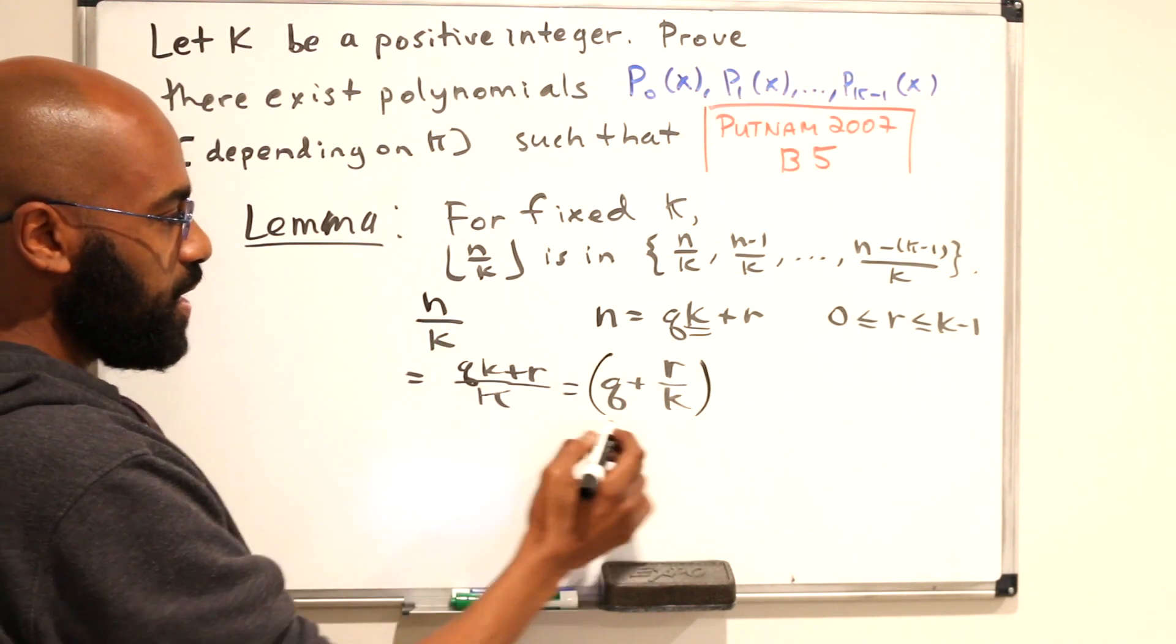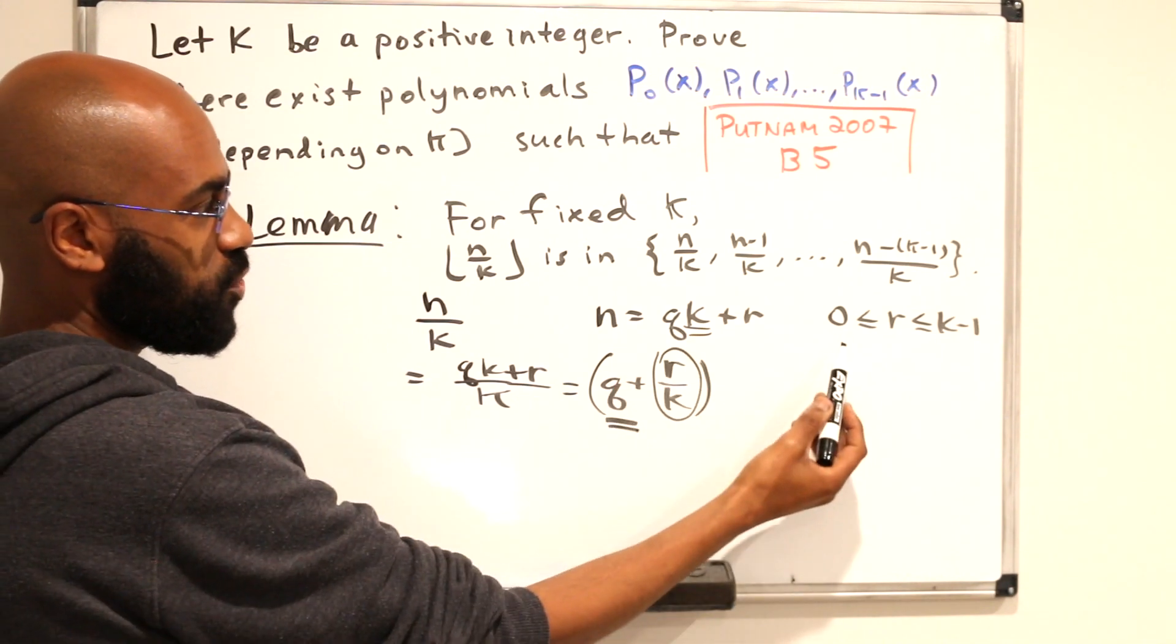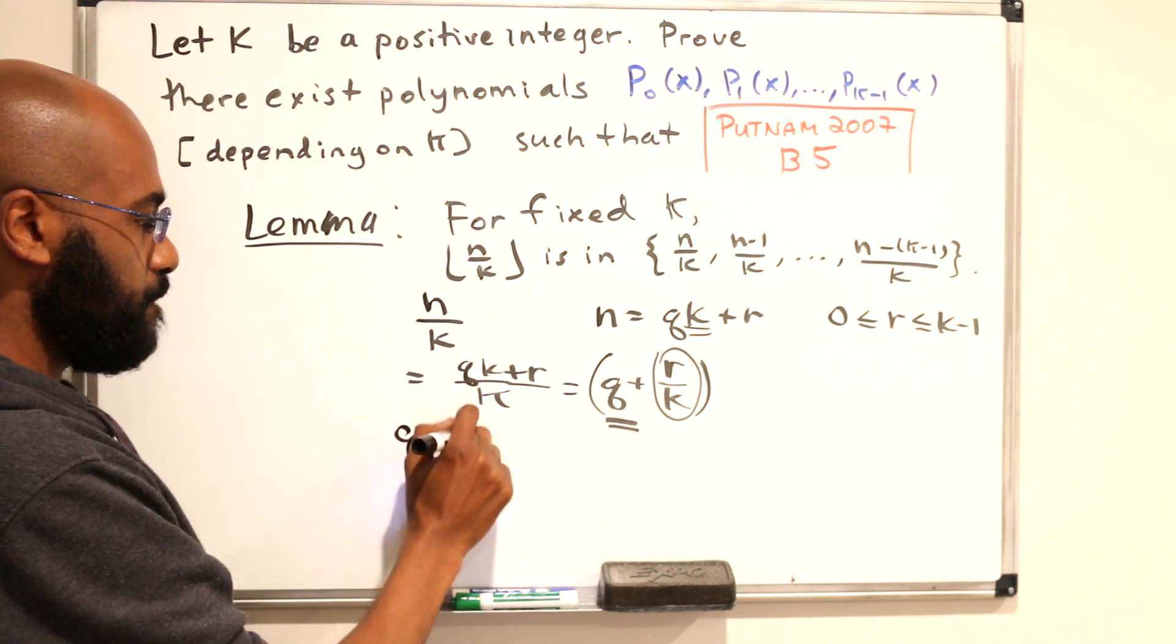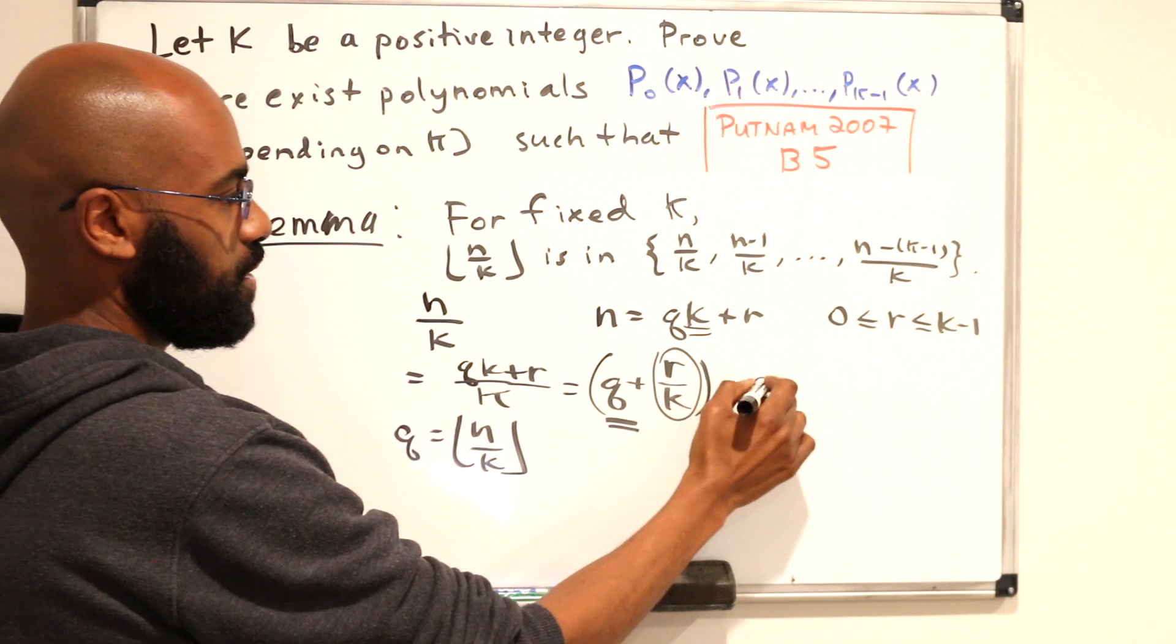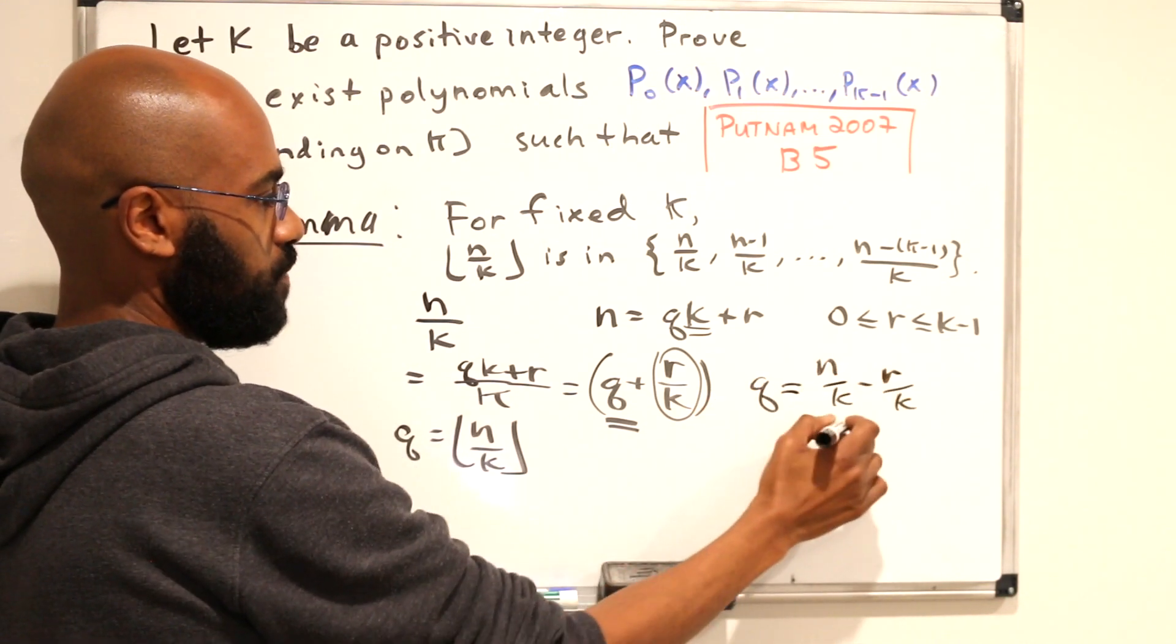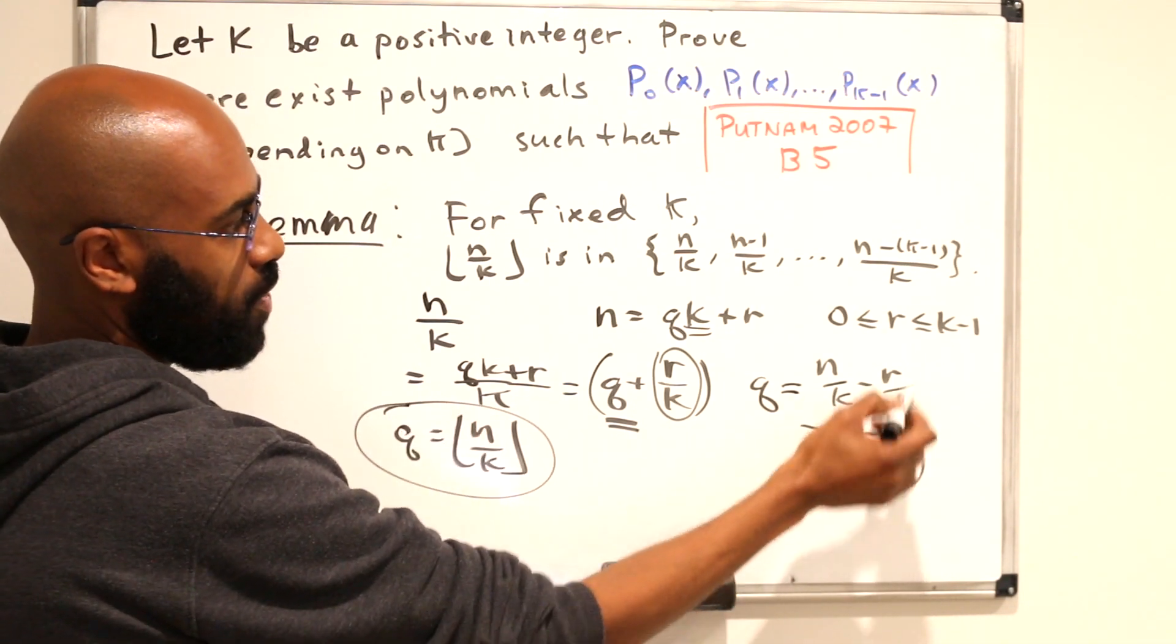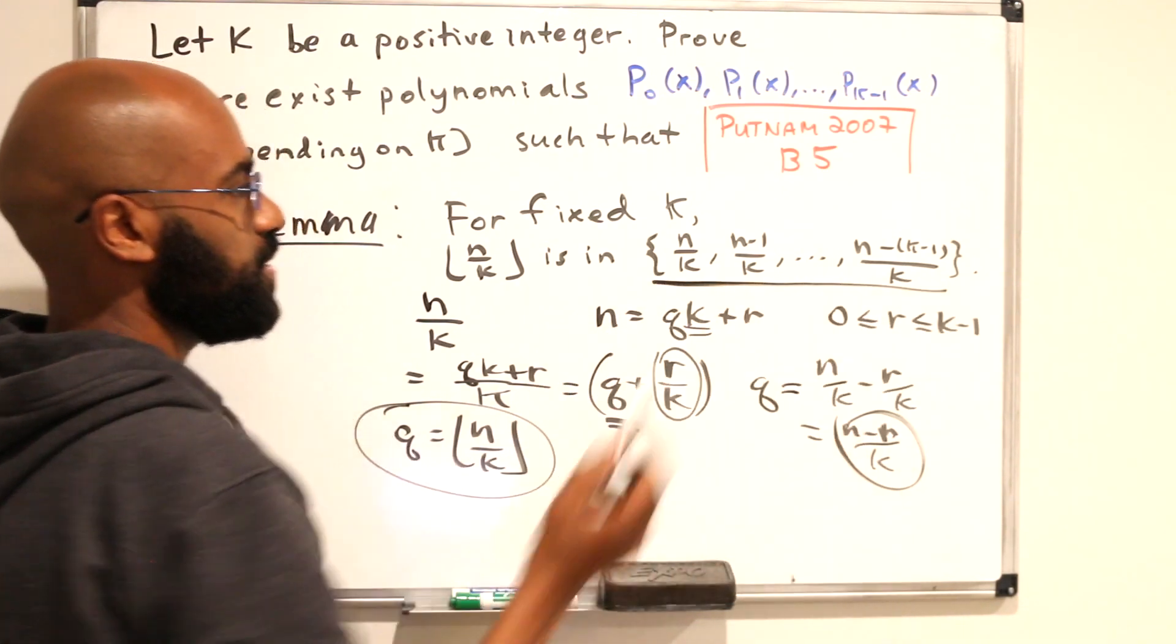Alright, so we see that n over k is this integer plus this little number right over here that is between 0 and 1. So q actually is the floor of n over k. And so q, when we rearrange this, is n over k minus r over k, which is n minus r over k. And so this floor of n over k is the number of this form where r is between 0 and k minus 1, and that's exactly what we have in this set right over here.